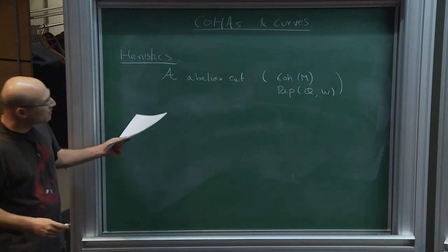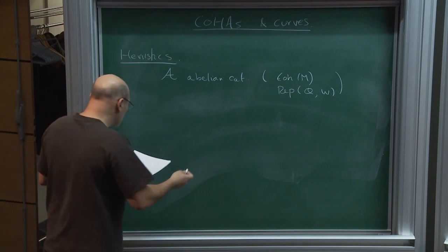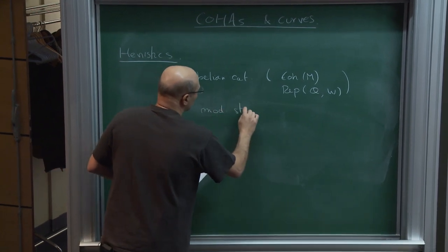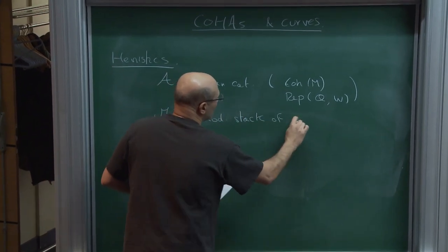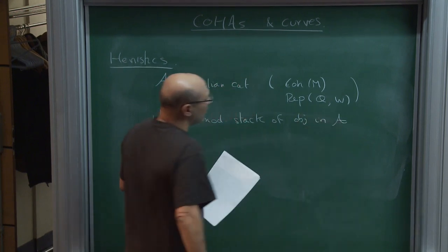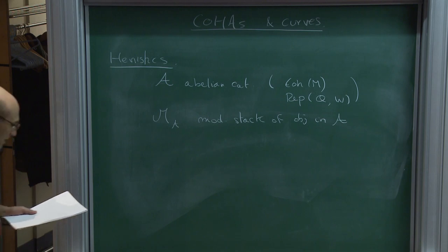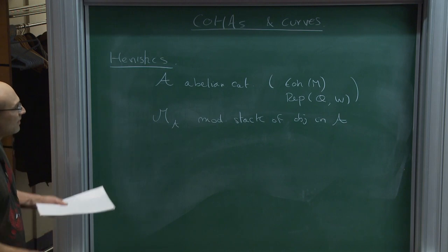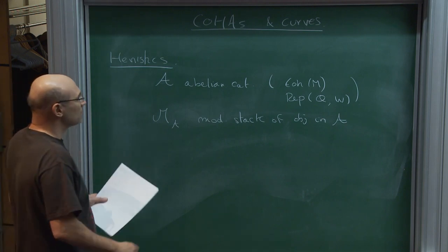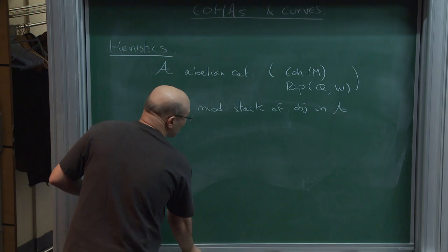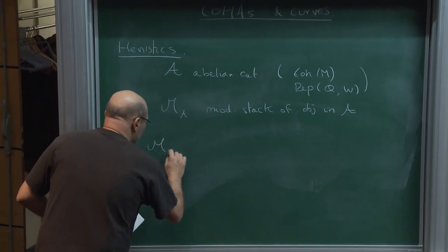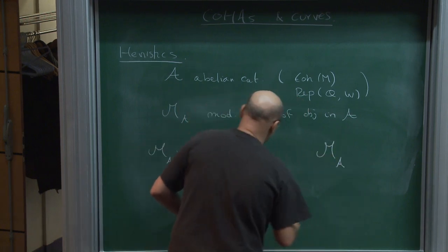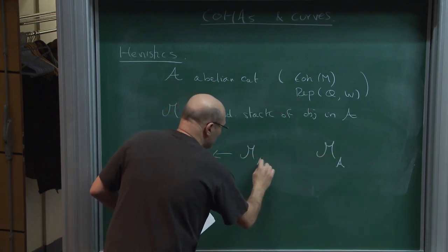Suppose that this abelian category is nice enough that there is some moduli stack of objects M_A — this could be very singular. But because this is the moduli stack of objects in some abelian category, there is a god-given correspondence between two copies of M_A and M_A itself.